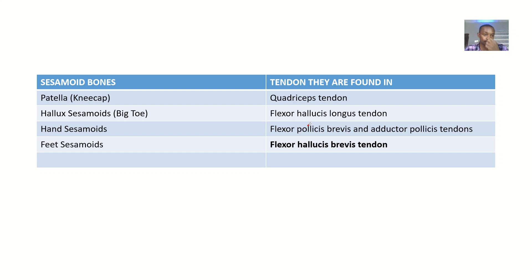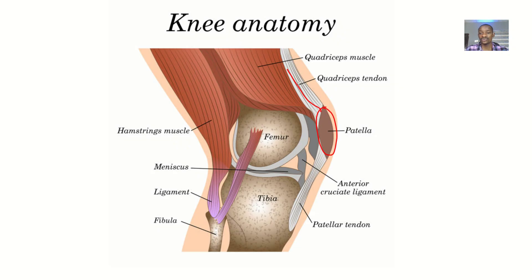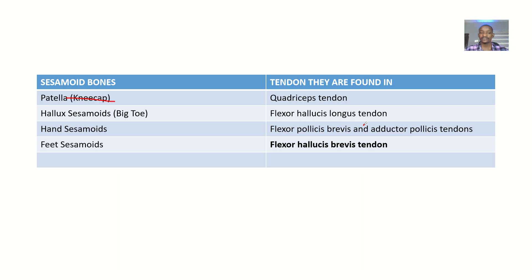This is what increases the mechanical advantage of the tendon. Looking at each one, we have the patella — commonly known as the kneecap — found in the quadriceps tendon, just as I've shown you.